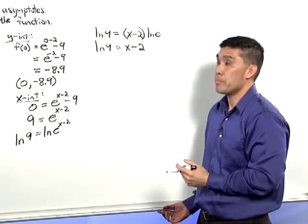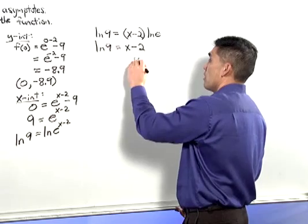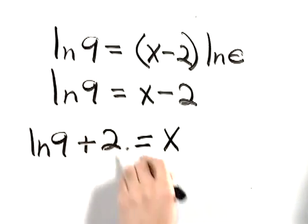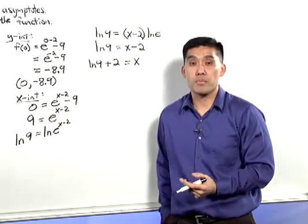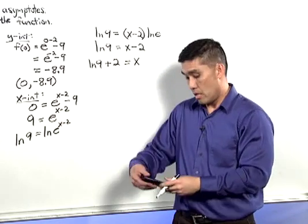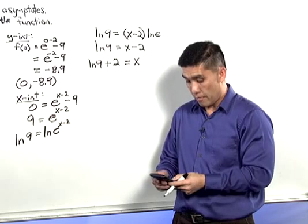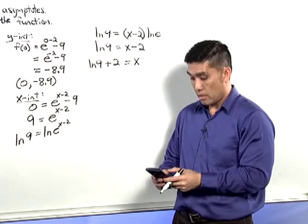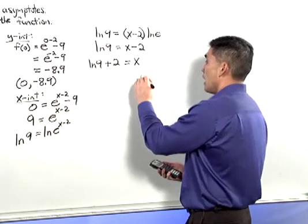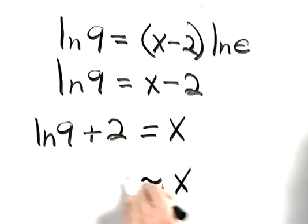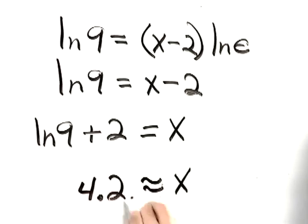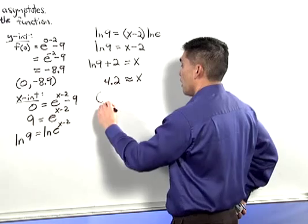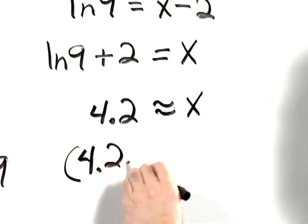Let's solve for x by adding 2 to both sides. So x equals the natural log of 9 plus 2. Once again, let's find an approximate value for this x. So let's get out our calculator and find the natural log of 9 and add 2 to that. We end up with x approximately being 4.2. So the x-intercept is 4.2 comma 0.